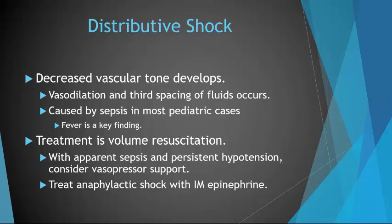Early in distributive shock, the child may have warm flushed skin and bounding pulses as a result of peripheral vasodilation. Signs and symptoms of late distributive shock are similar to those of hypovolemic shock. Fever is a key finding in septic shock. Urticarial rash and wheezing may be noted in anaphylaxis, and neurologic deficits are apparent in shock due to spinal cord injury. First-line treatment is volume resuscitation. In a child with apparent sepsis who remains persistently hypotensive despite up to 60 milliliters per kilogram of isotonic fluids, vasopressor support may be considered. If anaphylaxis is present, give your gold standard: IM epinephrine.